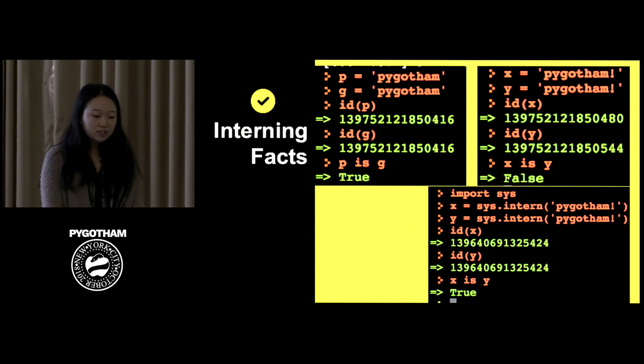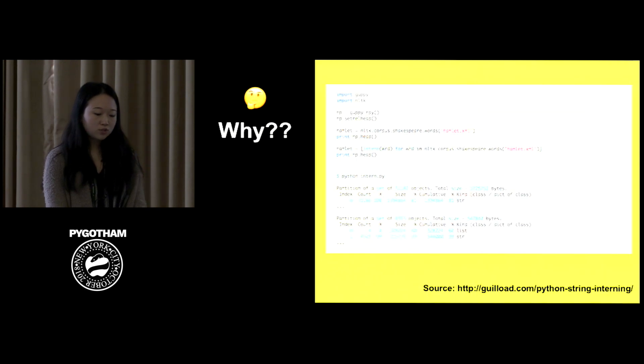If you really wanted to, you could intern these yourself manually by using the intern method. This can be found in the sys module in Python 3. It's also just built in in Python 2 as a default. So if I manually interned X and Y now with PyGotham with an exclamation point, you can see now they're pointing to the same memory location and X is Y will evaluate to true. You may be wondering why would you do this in the first place? So if you did this with something like Hamlet, you interned every single string that you found there, there would be significant memory improvement. So you would go from over 31,000 objects to less than 5,000 objects in your program by interning every single string. In addition, the number of bytes will decrease from over 1,700,000 bytes to a little over half a million bytes.